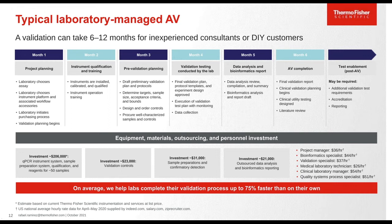After the analytical validation, you submit your documentation to your accrediting organization and start working on the reporting aspect. Regarding potential revenue costs: overall investment is around $200,000 for instrumentation and workflow. Control material could cost potentially around $20,000, confirmatory testing could cost around $30,000, and outsourcing the data analysis piece around $21,000. On average, we help labs complete their validation process up to 75% faster on their own.